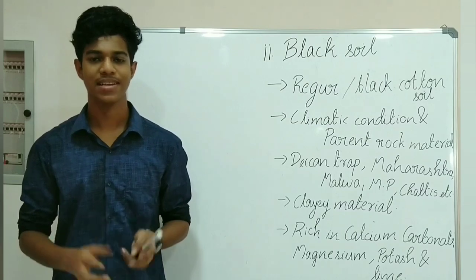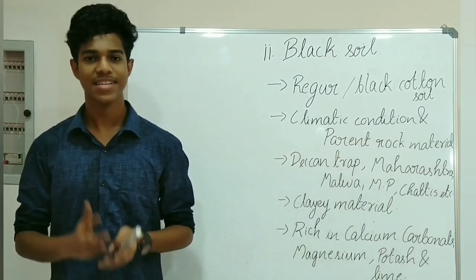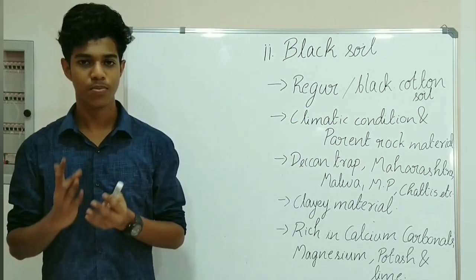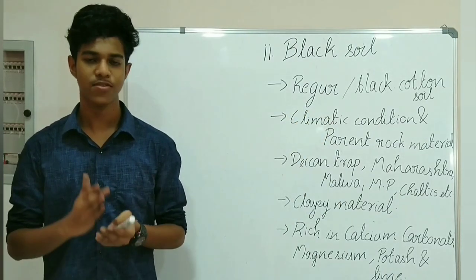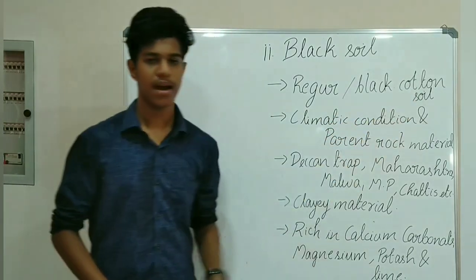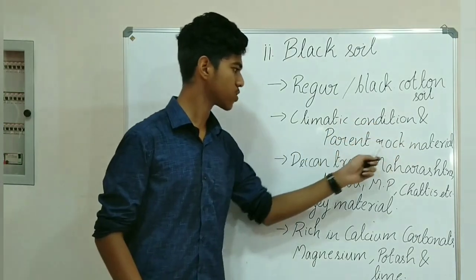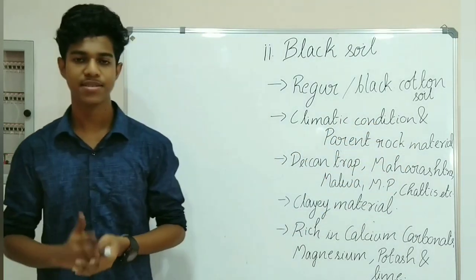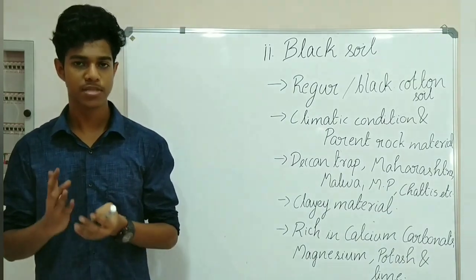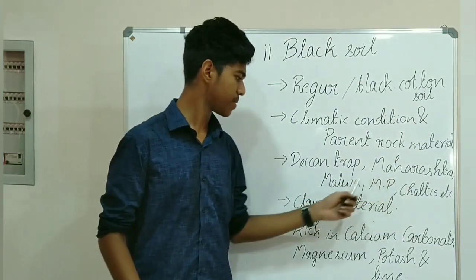The second soil is black soil. Since it is black in color, it is also known as Regur soil. Black soil is one of the most suitable soils for the cultivation of cotton, so it is also called black cotton soil. Climatic conditions and parent materials are the major factors responsible for the formation of black soil. Black soil is mostly found in the Deccan Trap and plateau regions of Maharashtra, Malwa, Madhya Pradesh, and Saurashtra.